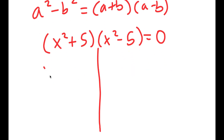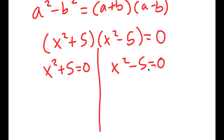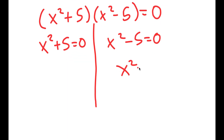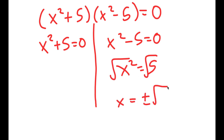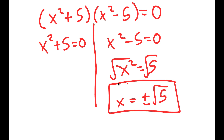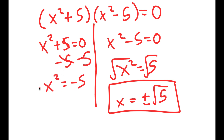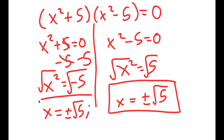So I get two equations: x squared plus 5 equals 0, and x squared minus 5 equals 0. For x squared minus 5 equals 0, I get x squared equals 5. If I take the square root on both sides, I get x is equal to positive or negative square root of 5. Now for x squared plus 5 equals 0, I can subtract 5 on both sides, so I get x squared is equal to negative 5. If I take the square root, I get x is equal to the square root of negative 5, which is equal to the square root of 5 times i. So these are my four solutions to this equation.